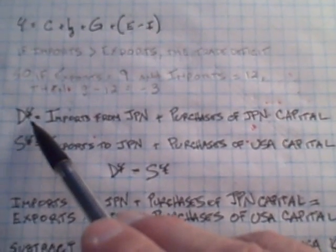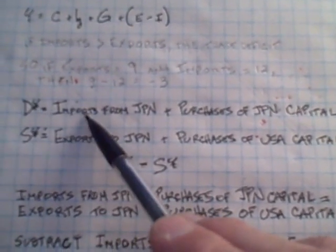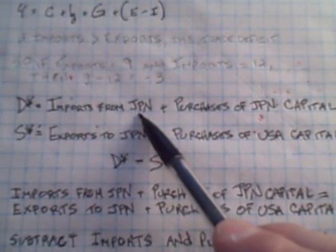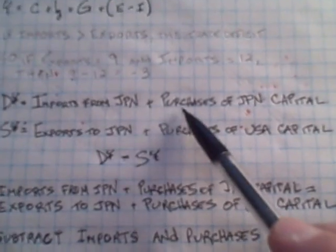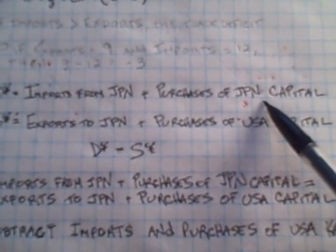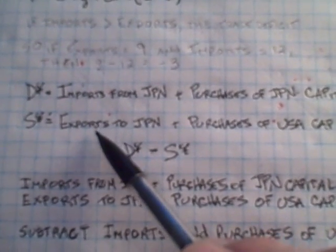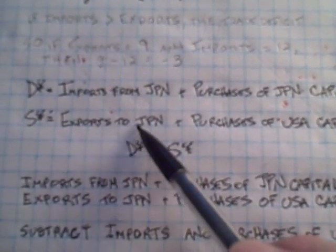The demand for yen will equal the imports from Japan, stuff that we want to buy from Japan, plus the purchases of Japanese capital like their bonds. The supply of yen then will be what we export to Japan and whatever they buy of our capital.